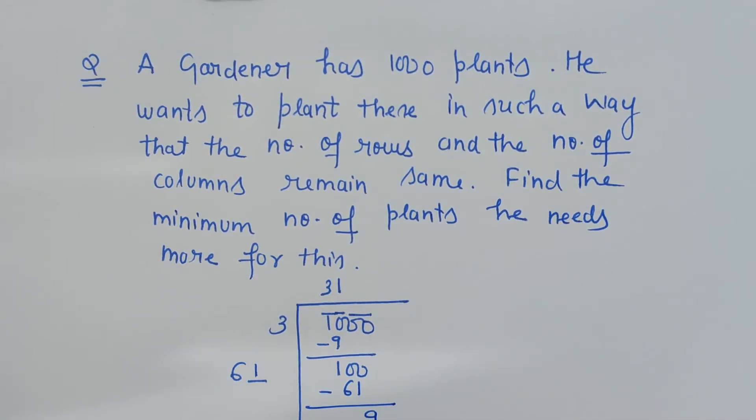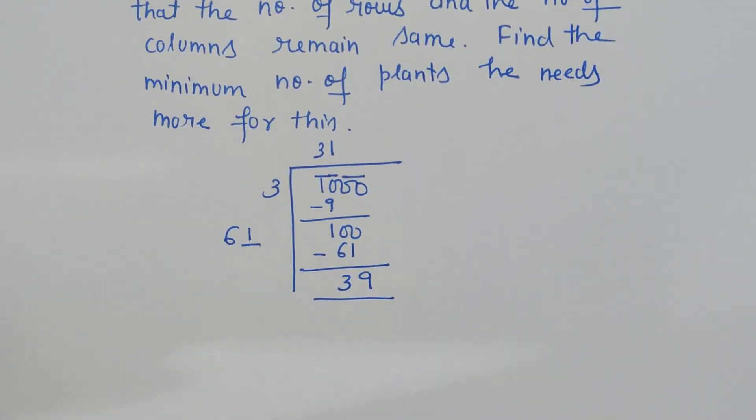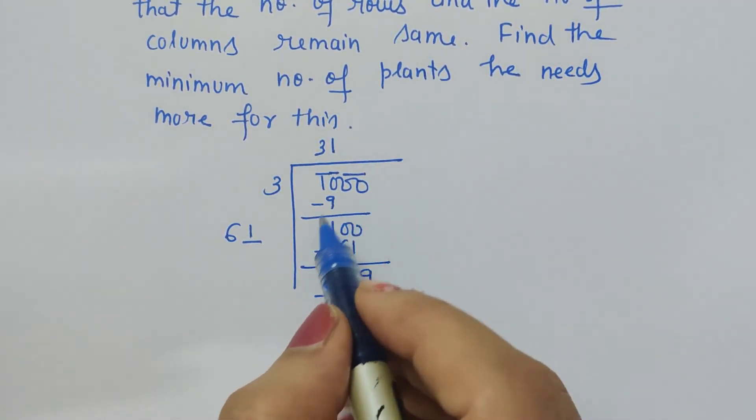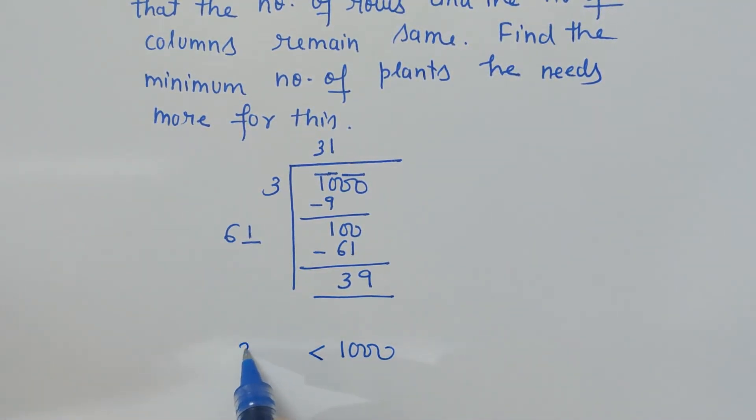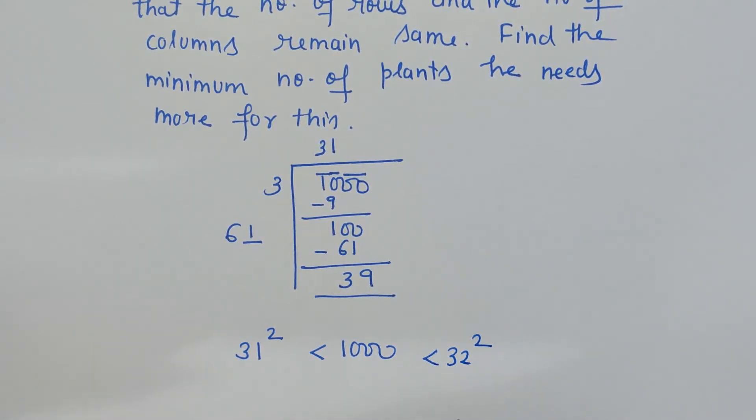And the difference is 39. 39 is the difference. Now from this what is clear to us? It is clear that this 1000 value somewhere lies between square of 31 and square of 32.